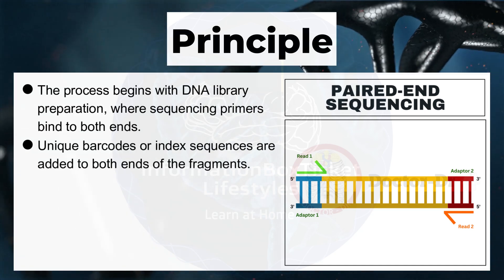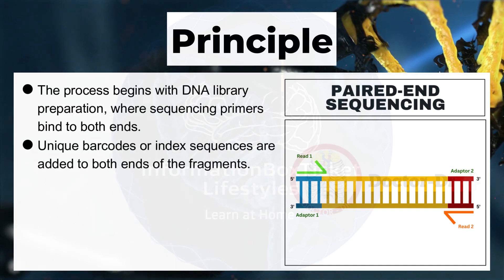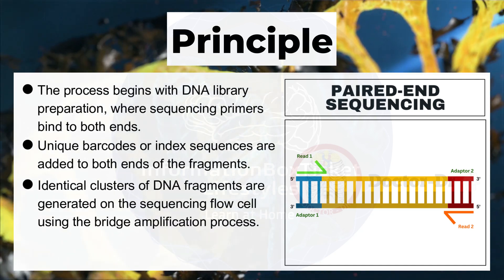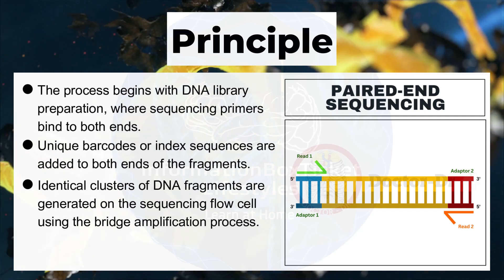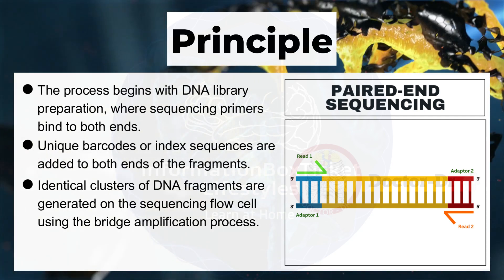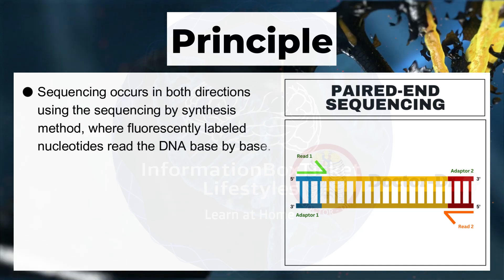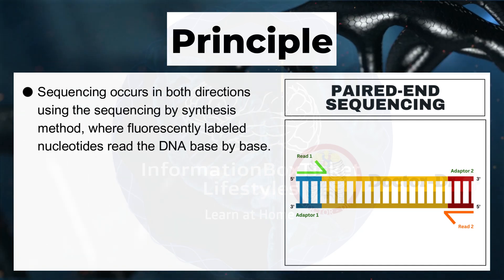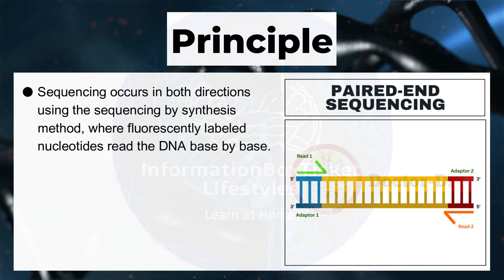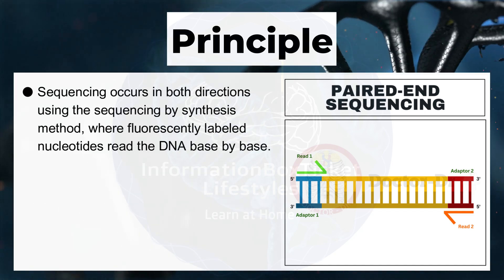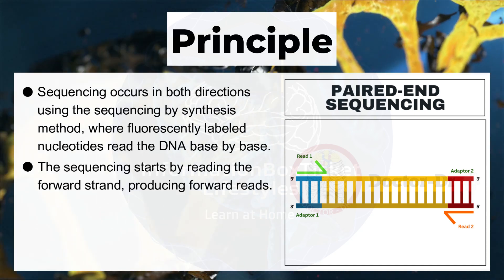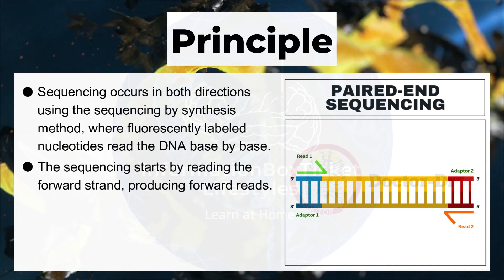Unique barcodes or index sequences are added to both ends of the fragments. Identical clusters of DNA fragments are generated on the sequencing flow cell using the bridge amplification process. Sequencing occurs in both directions using the sequencing by synthesis method, where fluorescently labeled nucleotides read the DNA base by base. The sequencing starts by reading the forward strand, producing forward reads.